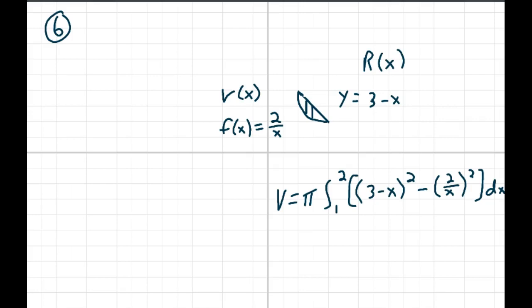Now this is just going around the x-axis, so we're just going to use those functions and square them. So the volume is equal to pi, integral from 1 to 2, that's the intersection points, of 3 minus x quantity squared, minus 2 over x quantity squared.